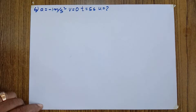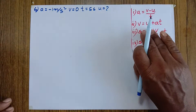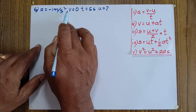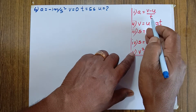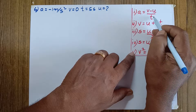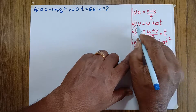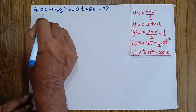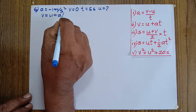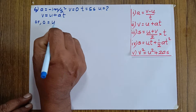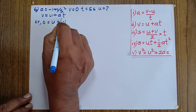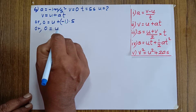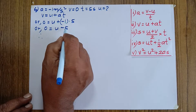We have a, v, and t given; u is unknown. We select the equation containing all four: a, v, t, and u. The first equation, v = u + at, works. Substituting: 0 = u + (−1)(5), which gives 0 = u − 5.